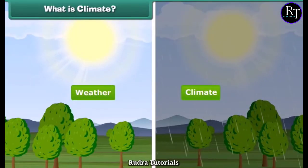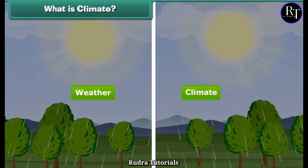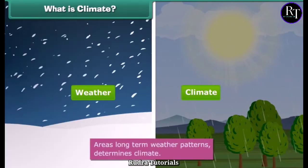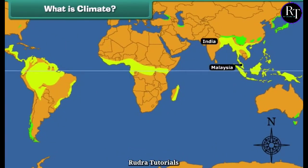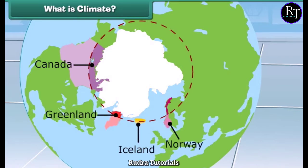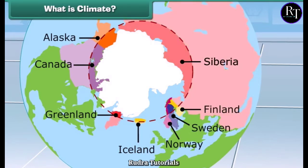Is weather and climate the same? No. An area's long-term weather patterns determine its climate. For example, areas near the equator have a warm climate and areas near the poles have a much colder climate. So children, now you can easily differentiate weather from climate.